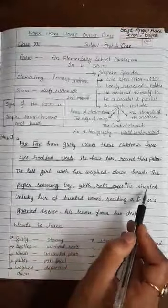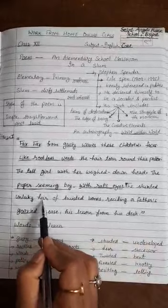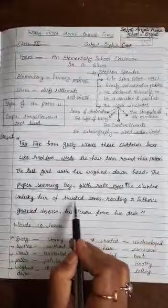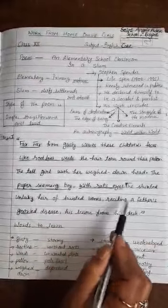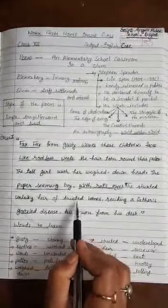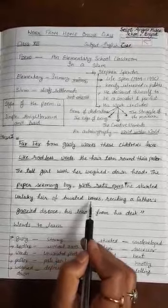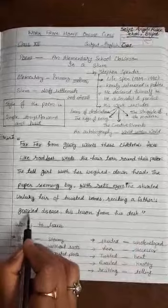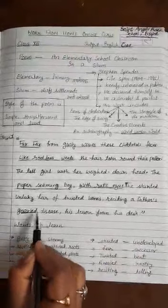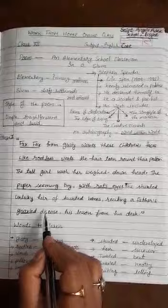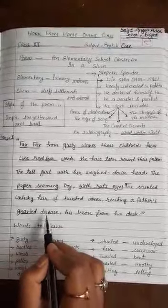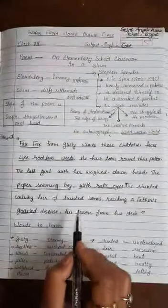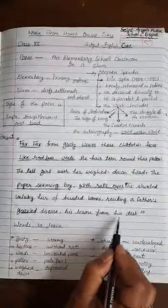The stunted unlucky heir of twisted bones. Stunted means undeveloped. Unlucky heir here means successor of the family. Twisted bones, twisted means bent. Here the boy was suffering from a disease in which his bones are twisted. Reciting a father's gnarled disease. Gnarled means knotty. That is gnarled disease which he has received from his father. He has inherited from his father, so he is suffering from the gnarled disease. So he recites his lesson from his desk.